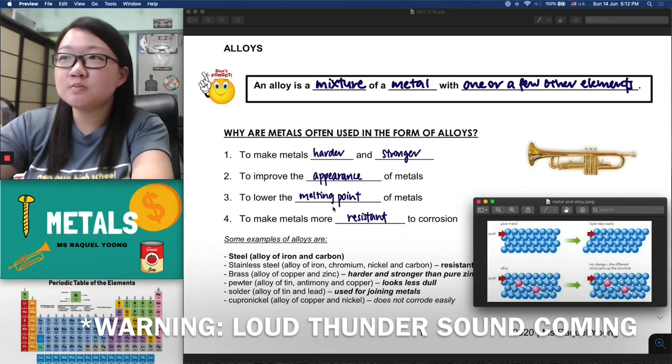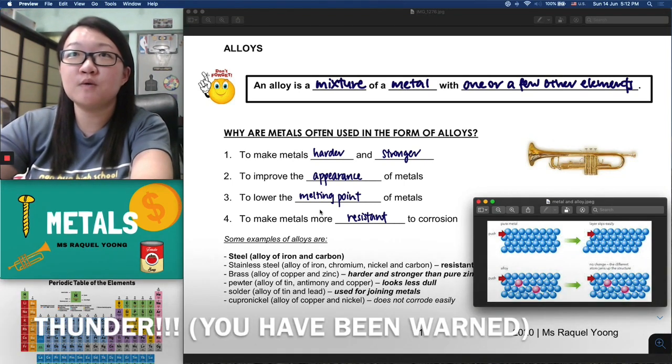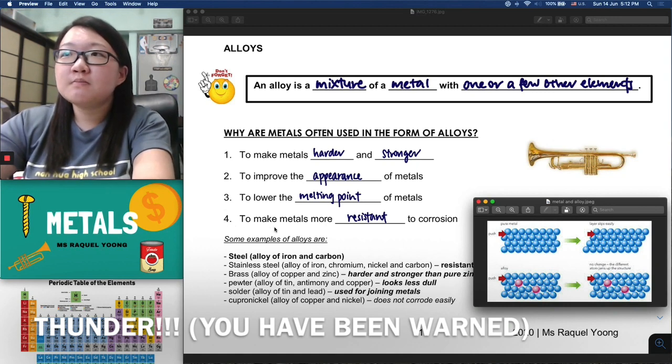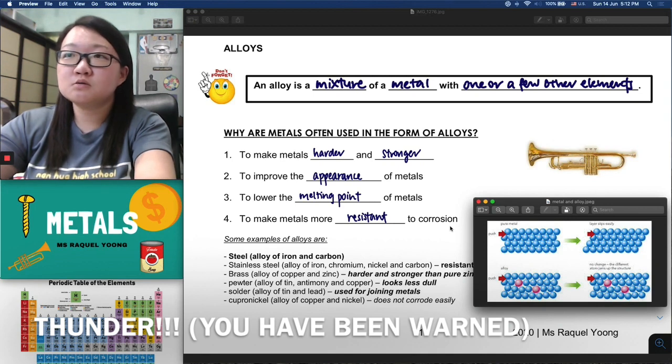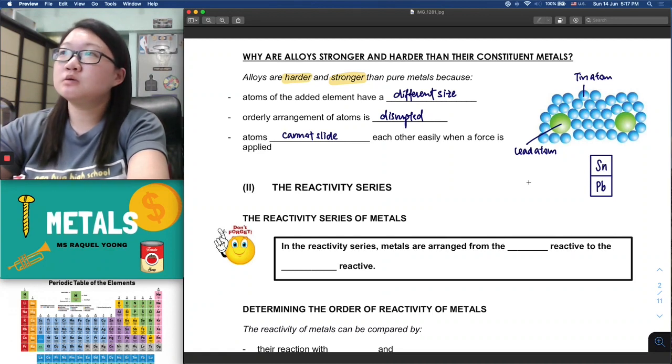Because the melting point of solder is pretty low, that's why you're able to use it to join different metallic components or parts together. Number four is to make metals more resistant to corrosion. This part we will talk about more later. If you turn to the next page of your notes, here is a summary of what I've mentioned just now. Why are alloys stronger and harder than their constituent metals? That's because the atoms of the added element have a different size.